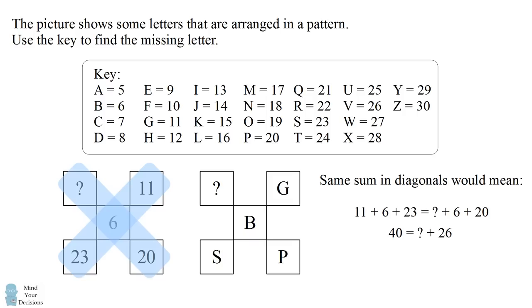This means that 40 would be equal to question mark plus 26, and therefore question mark would be equal to 14, and that converts back into the alphabetical value of J. So according to this pattern, the question mark should be equal to J.